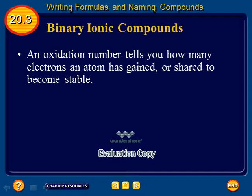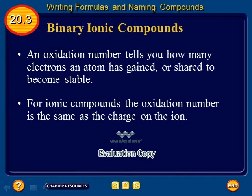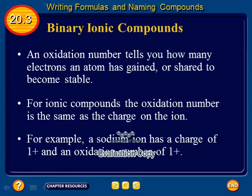An oxidation number tells you how many electrons an atom has gained or shared to become stable. For ionic compounds, the oxidation number is the same as the charge on the ion. For example, a sodium ion has a charge of 1+ and an oxidation number of 1+.